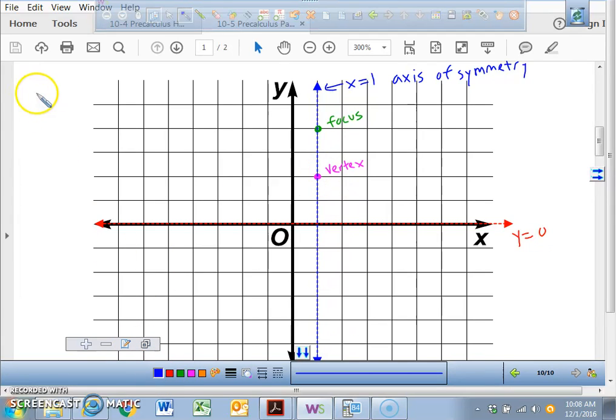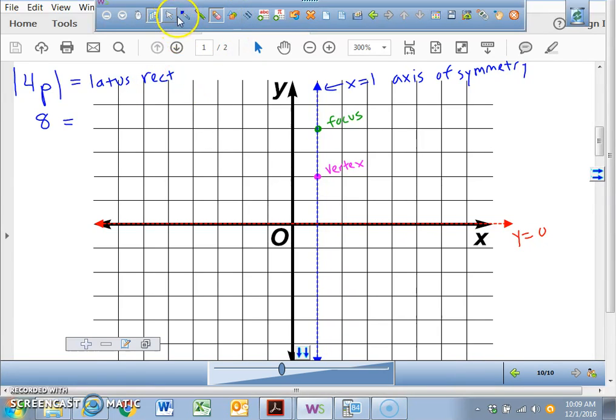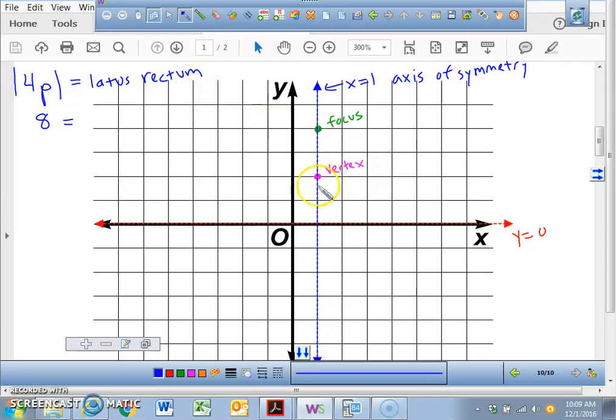Now there's a concept right here that we have not talked about. And this is a concept that deals with the absolute value of whatever 4 times p is. In this particular case, our absolute value is going to be equal to the number 8. That's what we got. 4p was equal to 8. So the absolute value of 8 is 8. This, everybody, this distance right here, the absolute value of 4p is equal to the concept called the latus rectum.